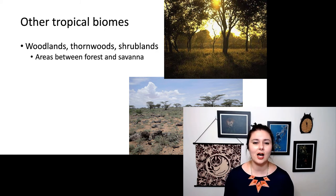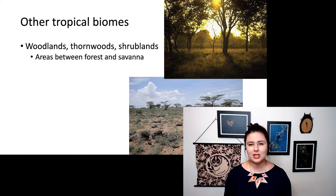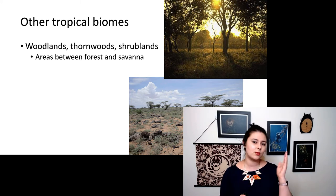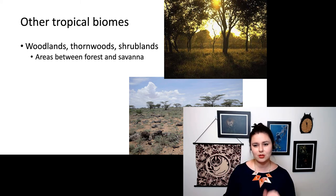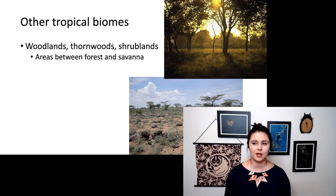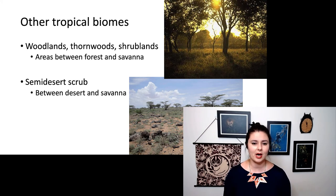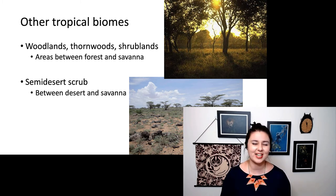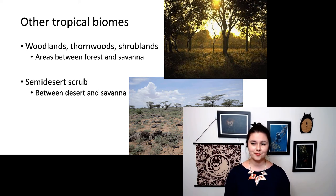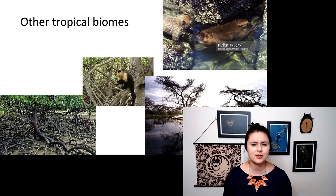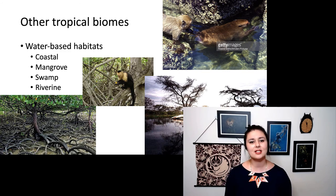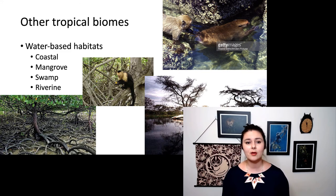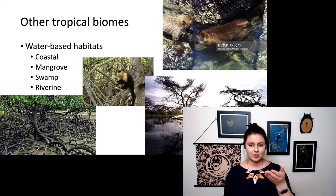There are a few other tropical biomes that we find primates in. There are intermediate habitats — woodlands, thornwoods, or shrublands — that gray area between a savannah and a forest, with a few more trees. We also have semi-desert scrub on the bottom, which is between a desert and a savannah. There's a wide range of different habitat types, really depending on how much water is available.